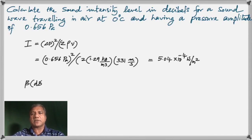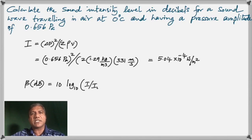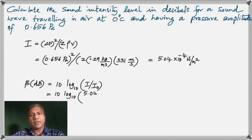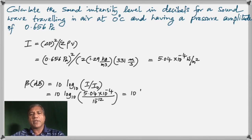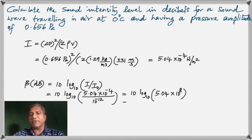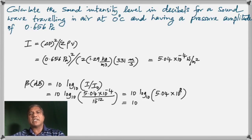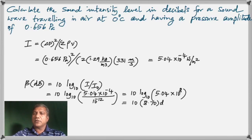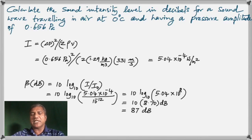Next, we convert this to decibels using the formula: beta equals 10 log base 10 of I divided by I₀. We have I equal to 5.04 times 10 to the negative 4, divided by I₀ which is 10 to the negative 12 — the threshold of hearing. Dividing gives 5.04 times 10 to the 8. Taking the log base 10 of that number gives 8.70, and multiplying by 10 gives 87 decibels. That's how we convert intensity from watts per meter squared to decibels.